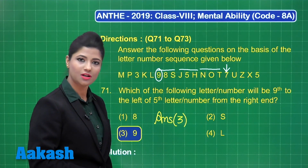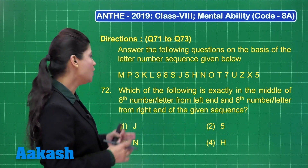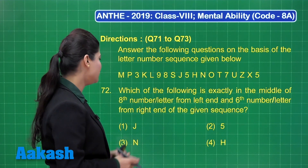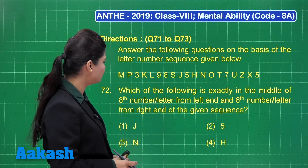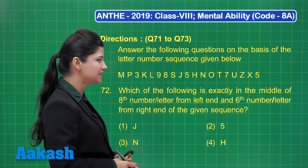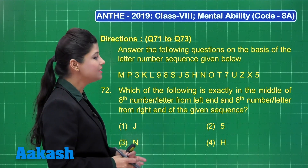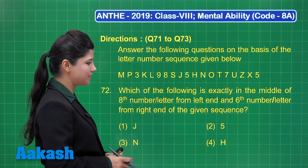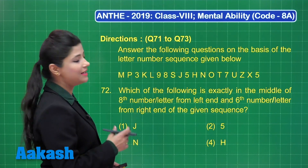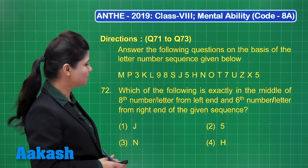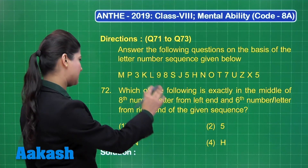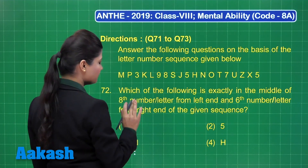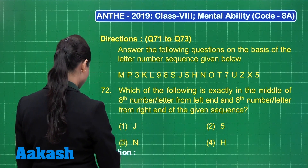Let's proceed to question number 72. It states: which of the following is exactly in the middle of the eighth number or letter from the left end and the sixth number or letter from the right end of the given sequence? To find the answer, I will first obtain the eighth number or letter from the left end.